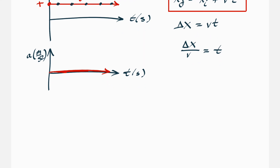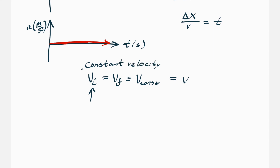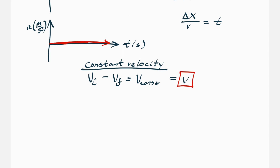Another equation to note: for constant velocity motion, v initial equals v final equals v constant, which we just call v. This is important to remember because the other situation is constant acceleration, and those equations must be kept separate. With constant velocity, there's no need for subscripts — just call it v.